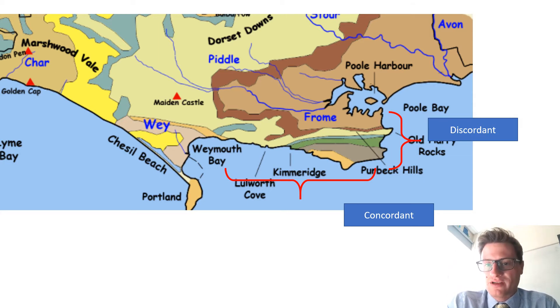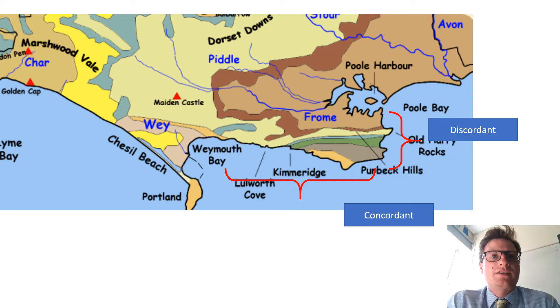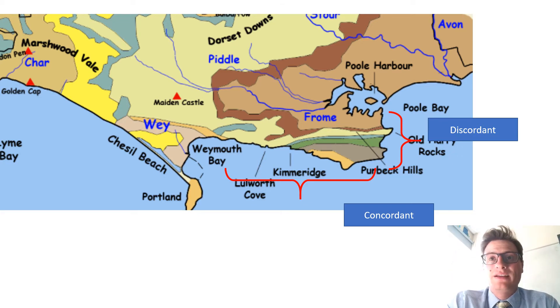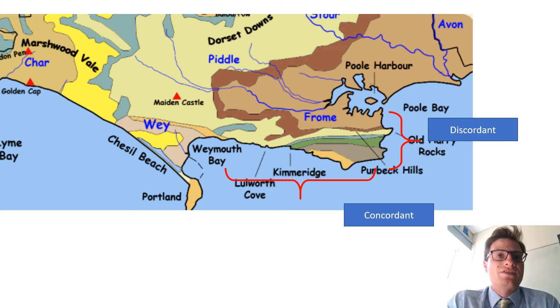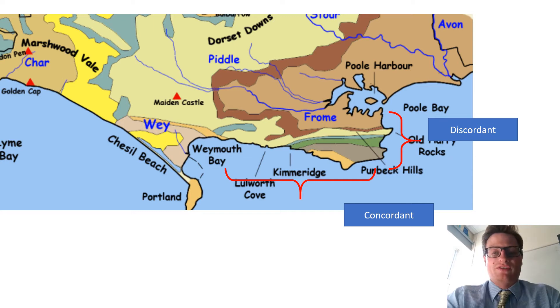Geology varies along these coastlines. Discordant coastlines are dominated by headlands and bays. Less resistant rocks are eroded to form bays, whereas more resistant geology remains as headlands, which protrude out into the sea.